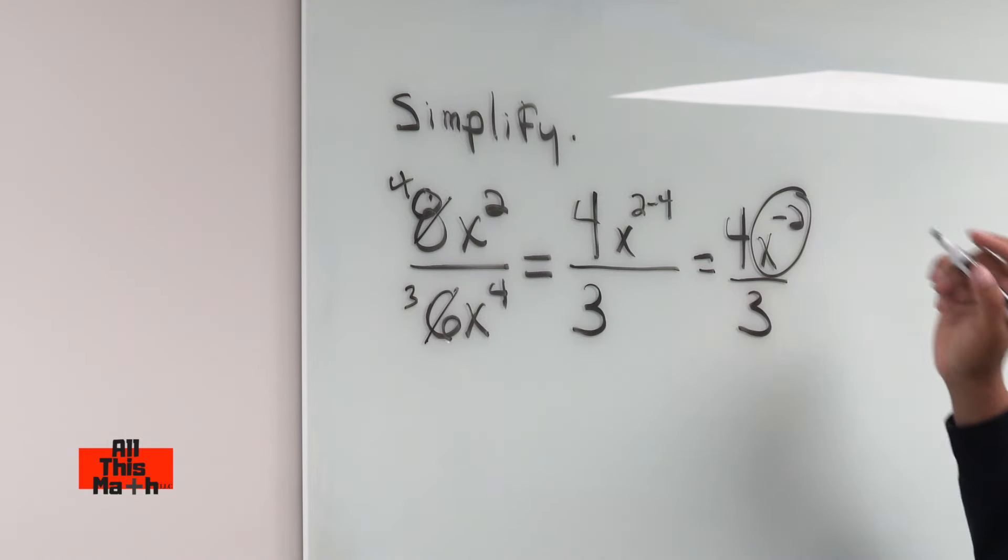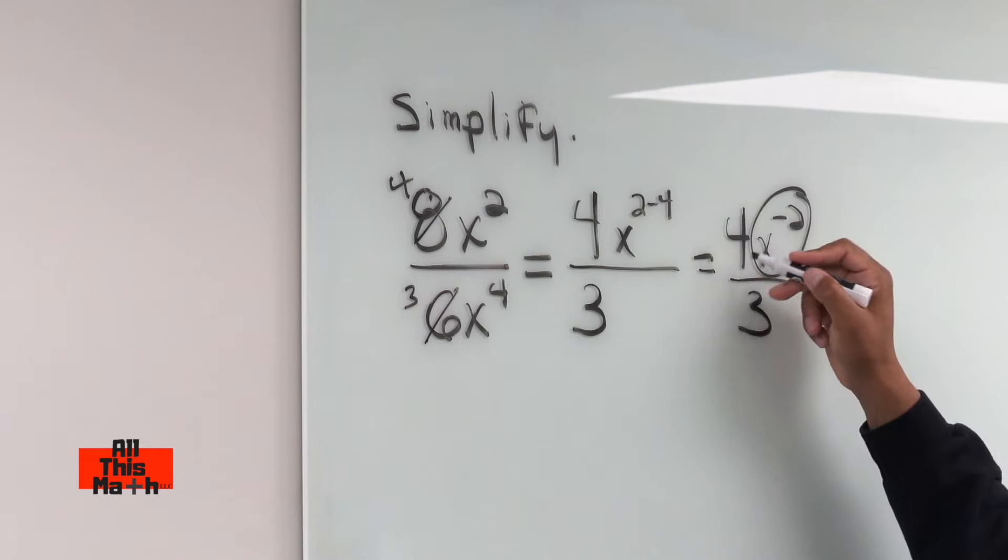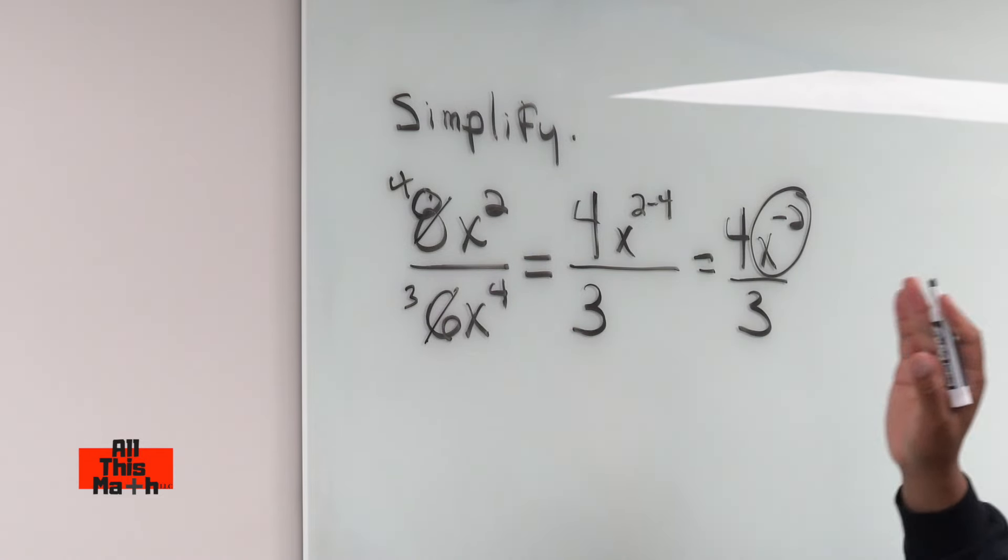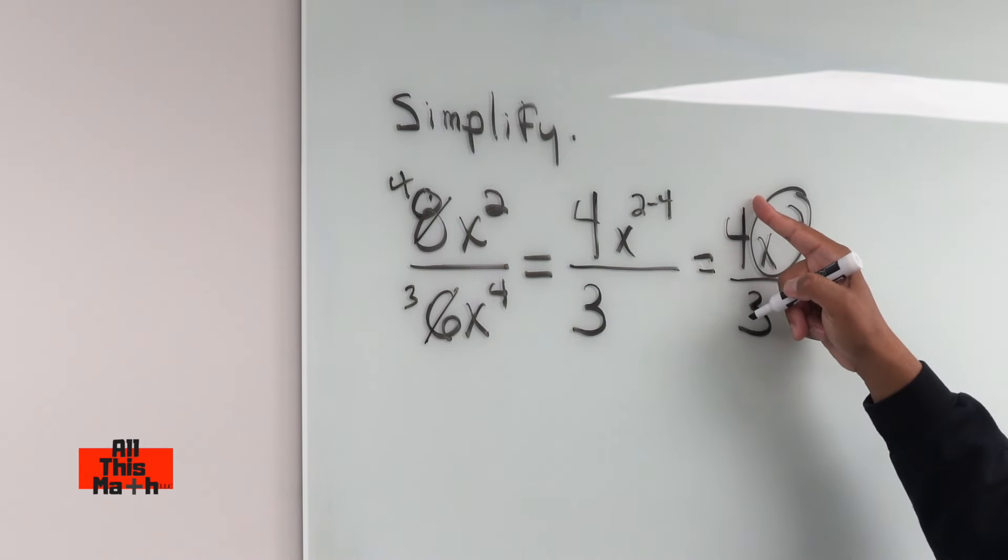But be very careful to understand that only the x has this exponent. 4 does not have this exponent, so we're not moving the 4. The 4 is going to stay put. The 4 is going to stay in the numerator because 4 has a positive exponent, an invisible 1 that we don't need to write.